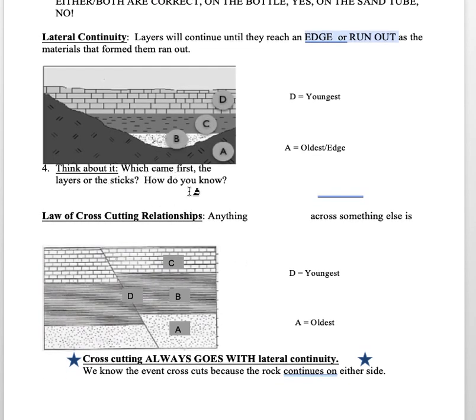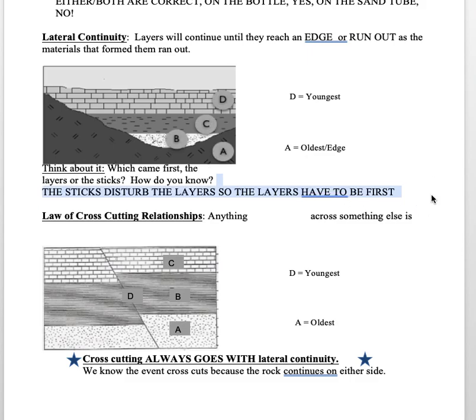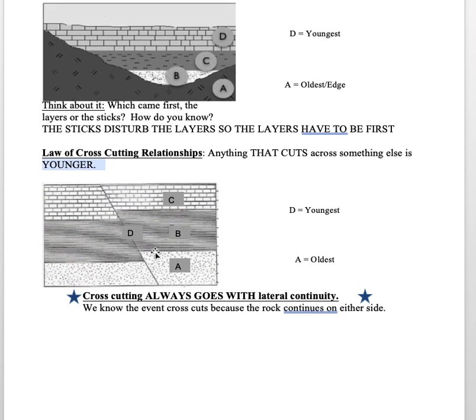Which came first, the layers or the sticks I used to make those shapes? That would be the sticks because the sticks disturb the layers, so the layers have to come first. This is called the law of cross-cutting relationships. Anything that cuts across something else is younger. Here we see that we have layers A, B, and C, and D comes and slices through there. D has to be the youngest. We know D cuts through because of that disappearing law of lateral continuity. A used to be one piece, B used to be one piece, C used to be one piece. D came and sliced through there and shifted things around. So cross-cutting always goes with lateral continuity, no matter what.